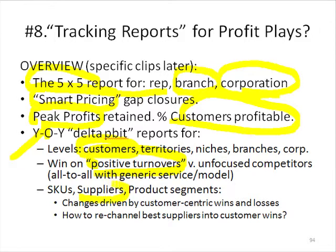Another one is the year-over-year supplier Delta Pibit report. One of the reasons it's so important is: if you look at which supplier is up the most and what was the cause, you'll realize that all the marketing, sales, and promotion programs you've done for the last year that were supplier-centric have negligible to even negative effect on the Delta Pibit report. The most profitable suppliers and items that are up the most are up because of a customer-centric win or loss — that's the difference with suppliers. We still want to work with our suppliers, but through a lens of customer-centric: how are suppliers helping us do better jobs with the five-by-five report?